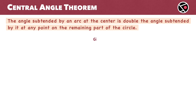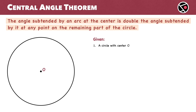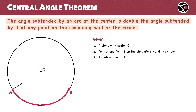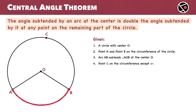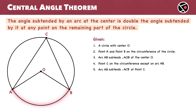So, what do we have? We have a circle with center O. We also have points A and B on the circumference of the circle. The arc AB subtends angle AOB at the center O. There is also a point C on the circumference. The same arc AB subtends angle ACB at point C. Our goal is to prove that angle AOB is twice angle ACB.